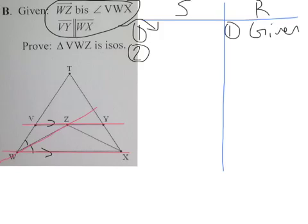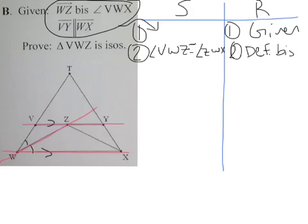So, I have my two angles congruent. So, we have angle VWZ congruent to angle ZWX. And, that's by definition bisect.